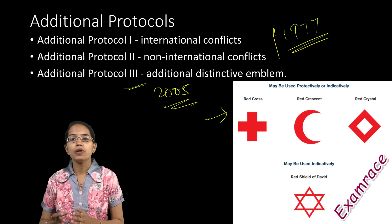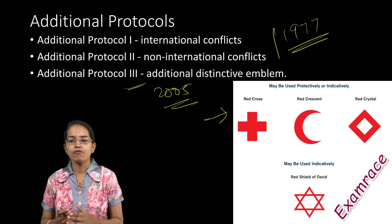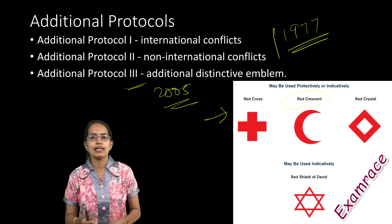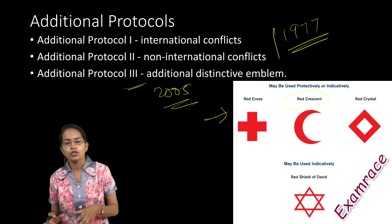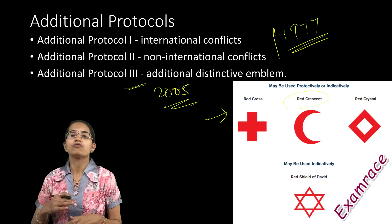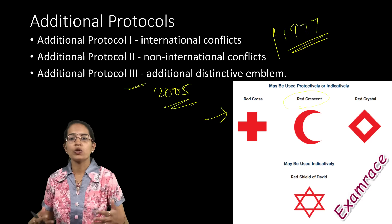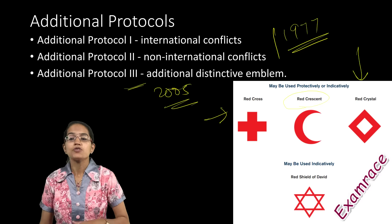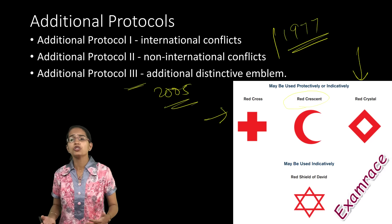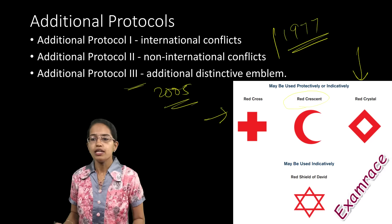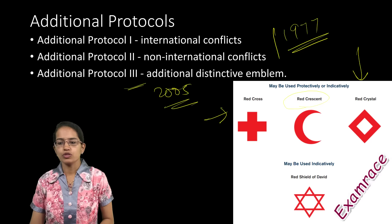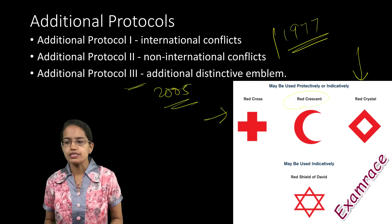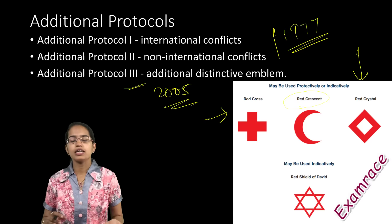Some countries, mainly the Ottoman Empire, believed this symbol alienated the Muslim population and created the Red Crescent symbol. After the fall of the Ottoman Empire, it was used by Turkey, Egypt, and many other nations including Pakistan. Later, it was believed there should be a neutral symbol, so the Red Crystal came up, previously known as red diamond or red laurence.